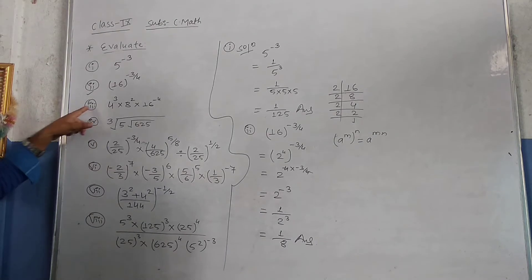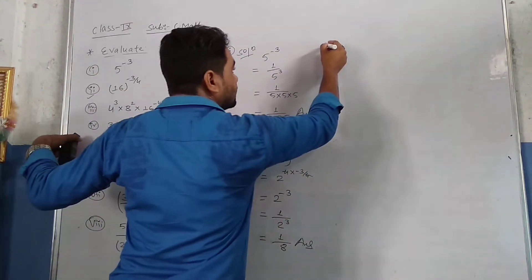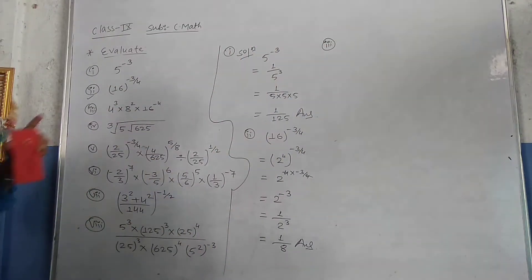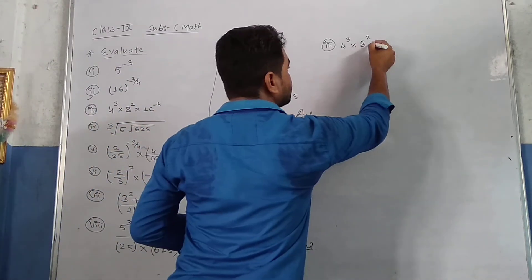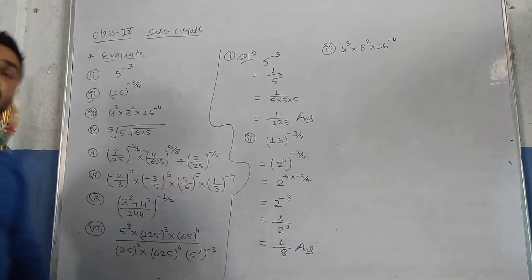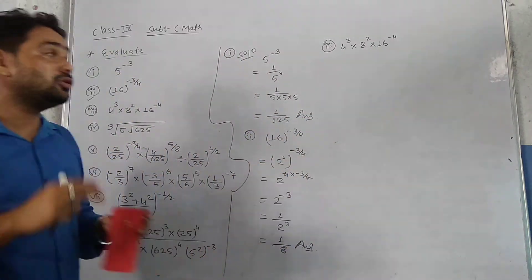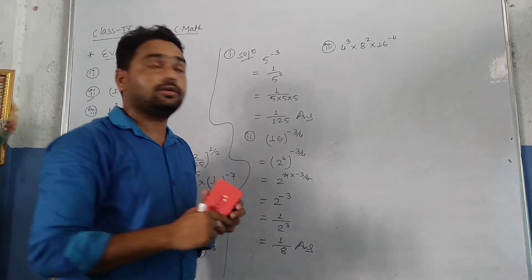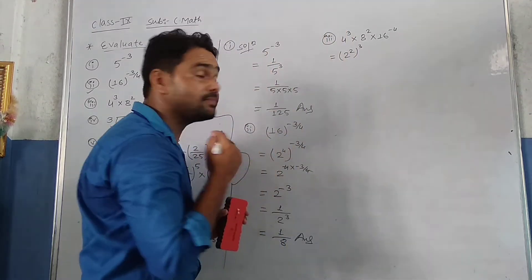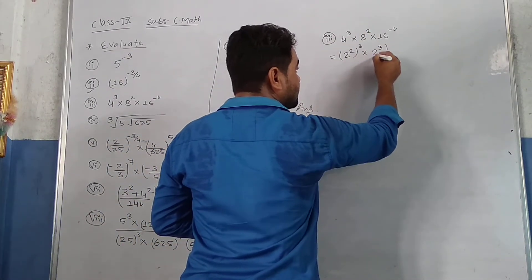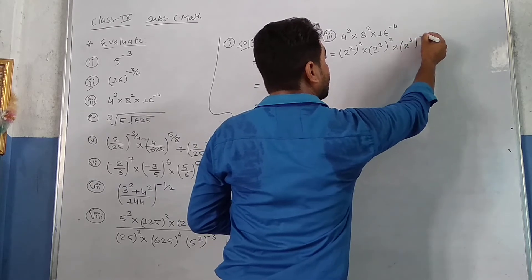Similarly, for the third one: it is given that 4 cube into 8 square into 16 power minus 4. Now 4, 8, and 16 can all be written in the form of 2. 4 can be written as 2 square, and the cube remains. Into 8 can be written as 2 cube, and the square remains. Similarly, 16 can be written as 2 power 4, and the minus 4 power remains the same.